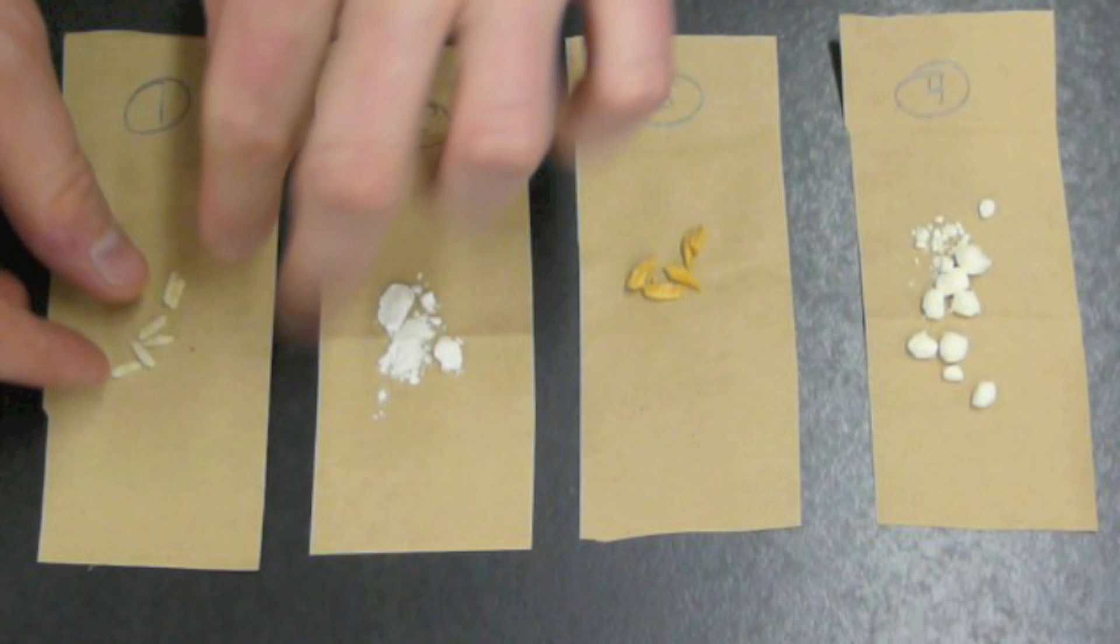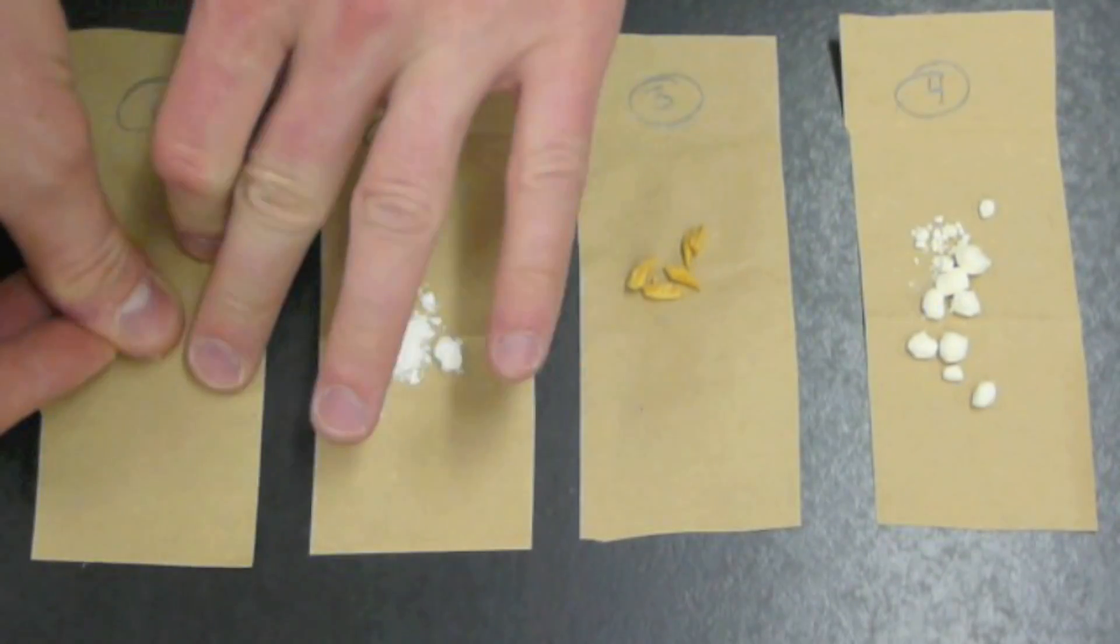In this experiment we'll be testing foods for fats and the test material we're going to use again is a paper bag. We're going to be taking each food and rubbing it into the bag first, as you can see here.